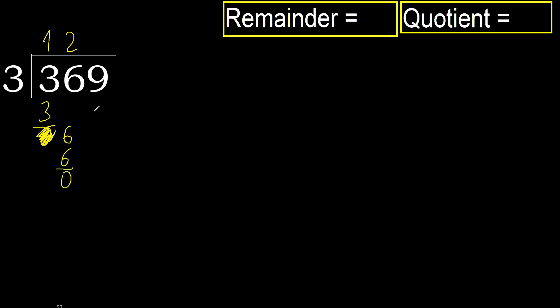Subtract. Next, bring down 9. 3 multiplied by 3 is 9 — it's not greater. So the next quotient digit is 3.